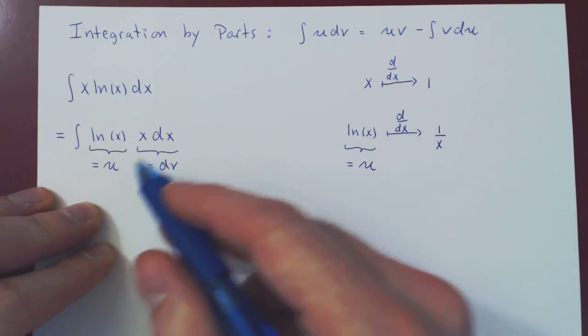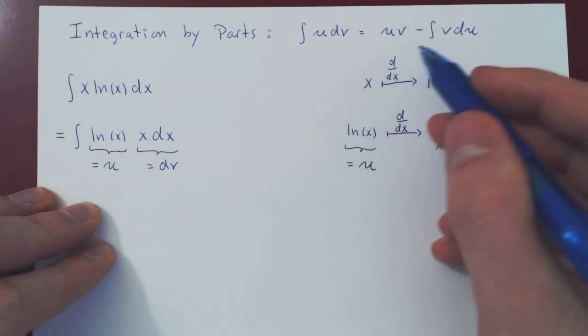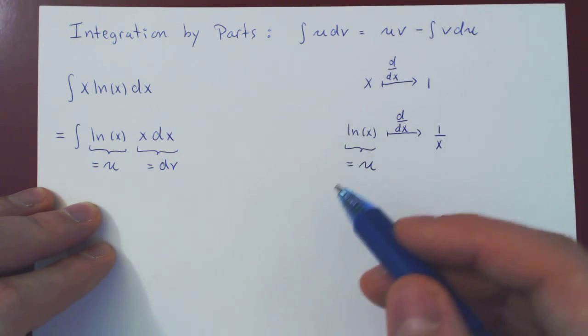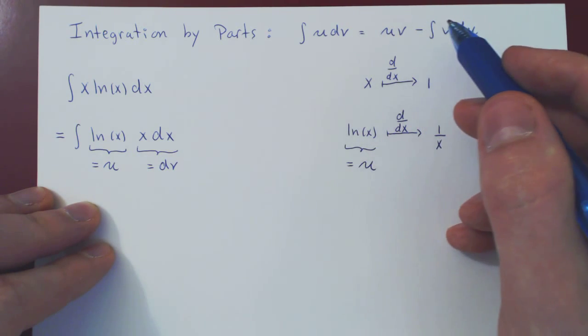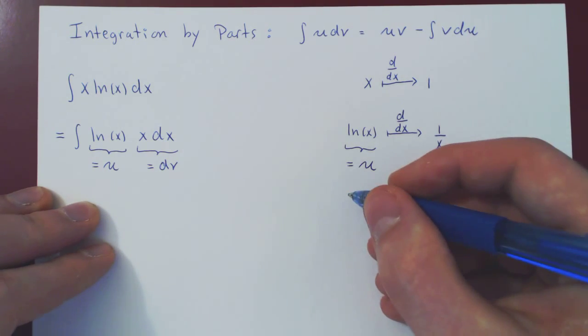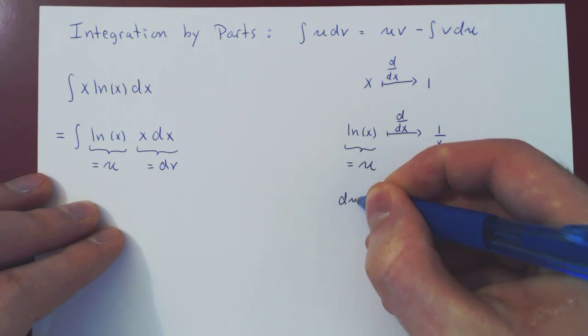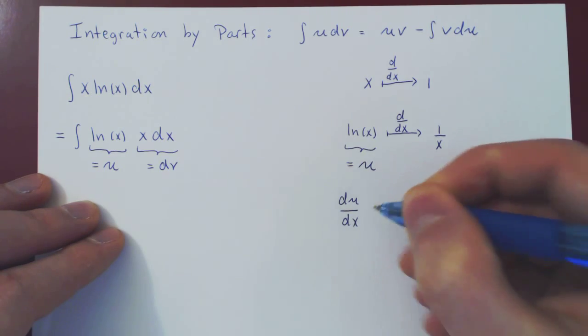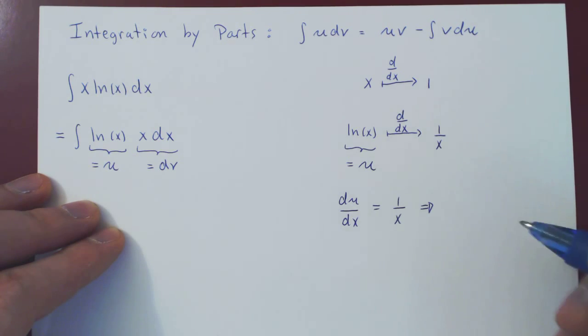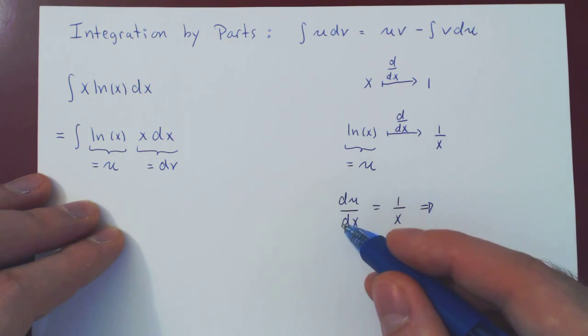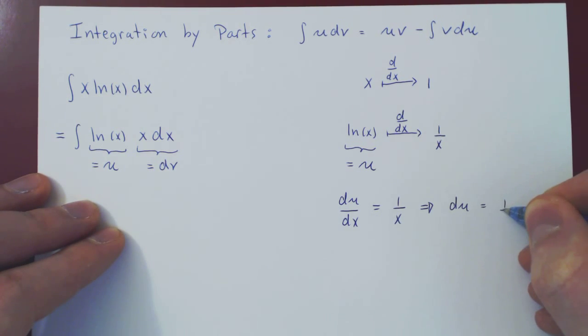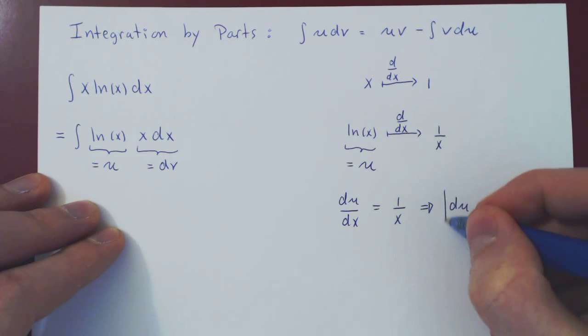And now again, we need from u to find our du and from dv to find our v. Well, to go from u to du, we differentiate. So the derivative of u with respect to x, as u is a function of x, is simply 1 over x. Again, we want du, so to solve for du, multiply by dx. And so du is quite simply 1 over x dx. So now we have our du.